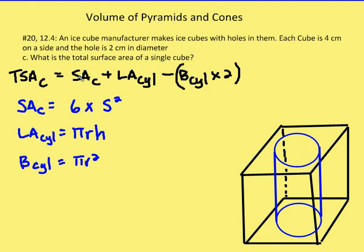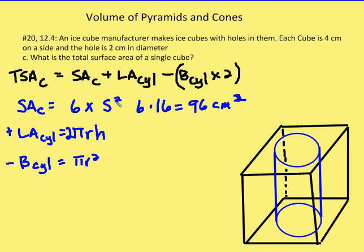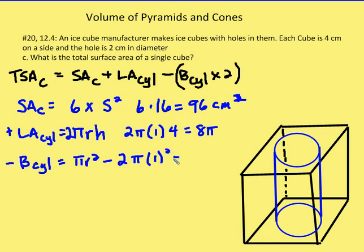The surface area of the cube is six times s squared. Each side is 4, so six times 16 gives 96 square centimeters. Adding the inside of the cylinder: two pi r times the height — two times pi times 1 times 4 — gives 8 pi. Then subtracting two times pi r squared — two times pi times 1 squared — gives 2 pi.